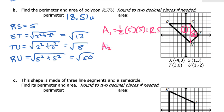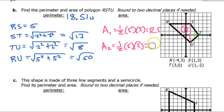Area two is another triangle — one half base times height. I'm going to use the vertical line as the base, so that's 5. The height has to be perpendicular to that, so the height is 2. One half times 5 times 2 — the one half and the two cancel each other out — so that's just 5. Adding these up: 12.5 plus 5 equals 17.5 units squared.